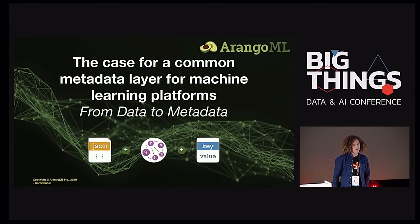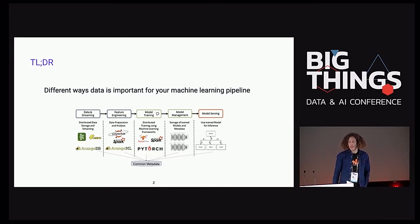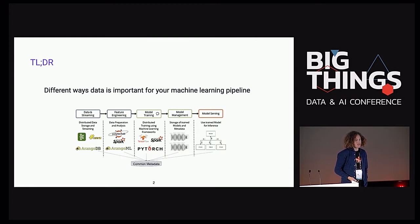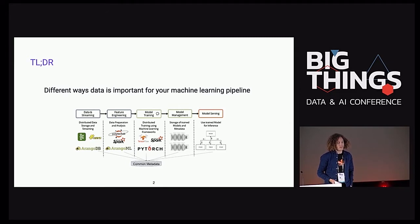Today I want to talk about the different ways in which data is important for your machine learning pipeline. Most of you are aware that data quality and preparing your data is super important to get proper output for your machine learning models. But also capturing metadata is very crucial to actually run and operate a machine learning pipeline in a production environment.